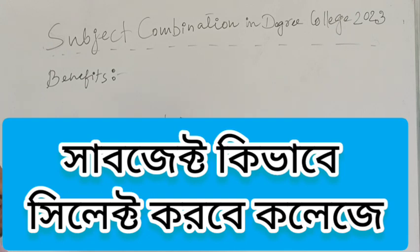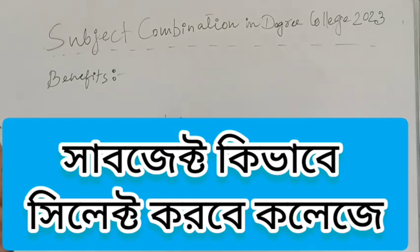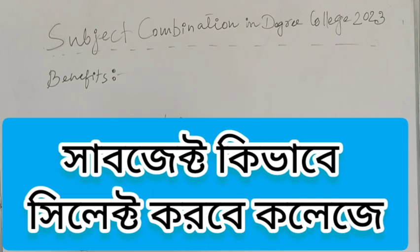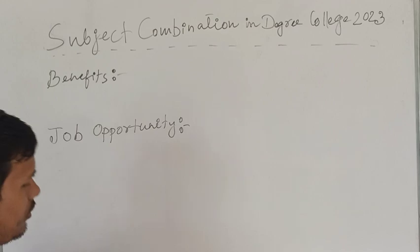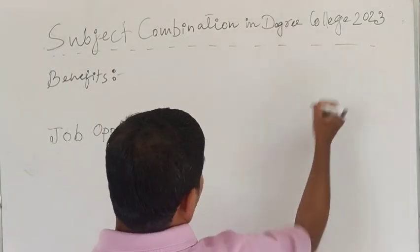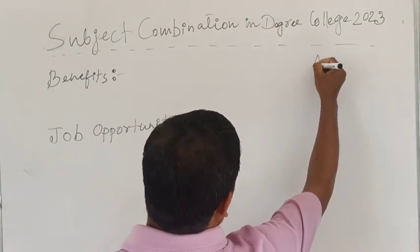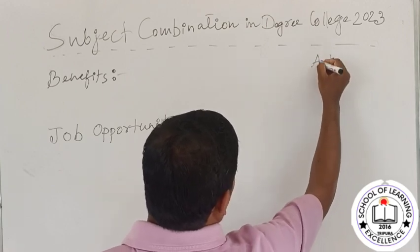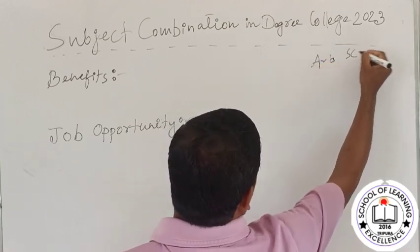We will discuss how to choose the subject in class 12, covering RMS and DMS streams. We will discuss the specific practices of Science and Commerce subjects.